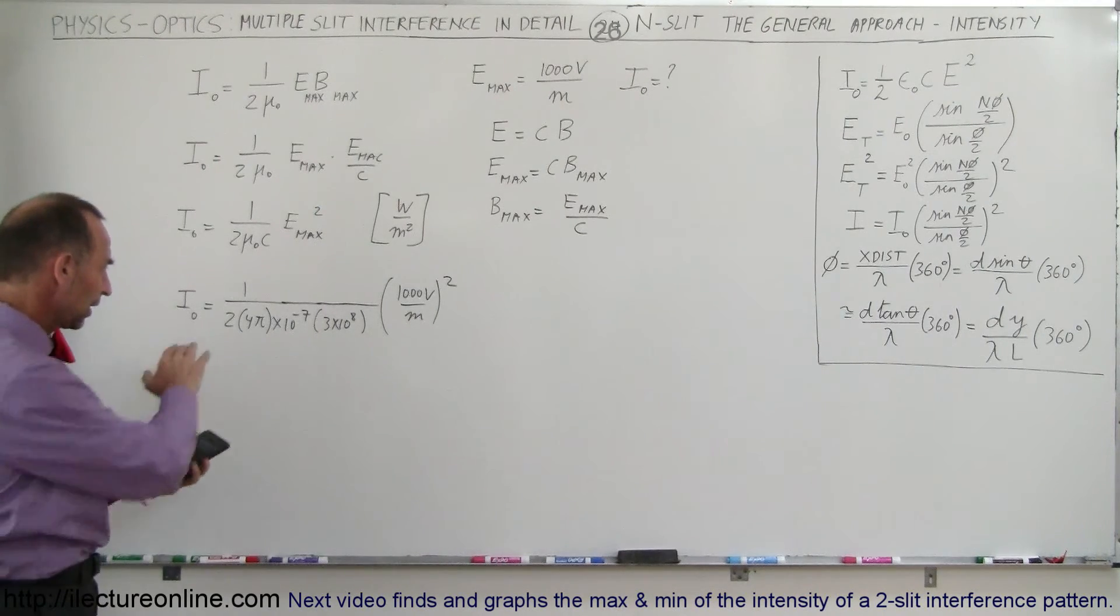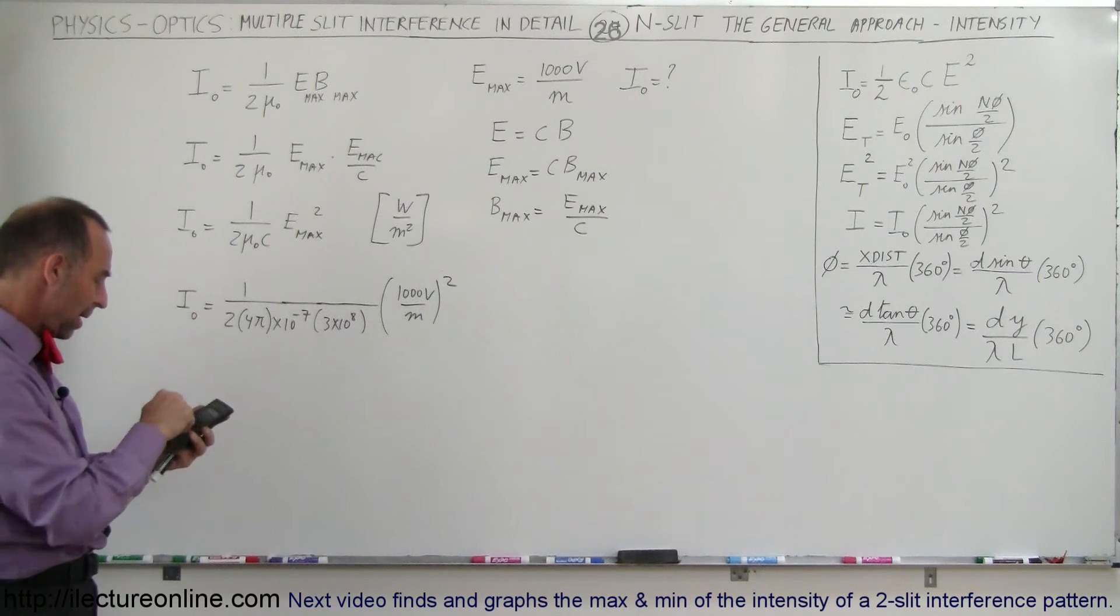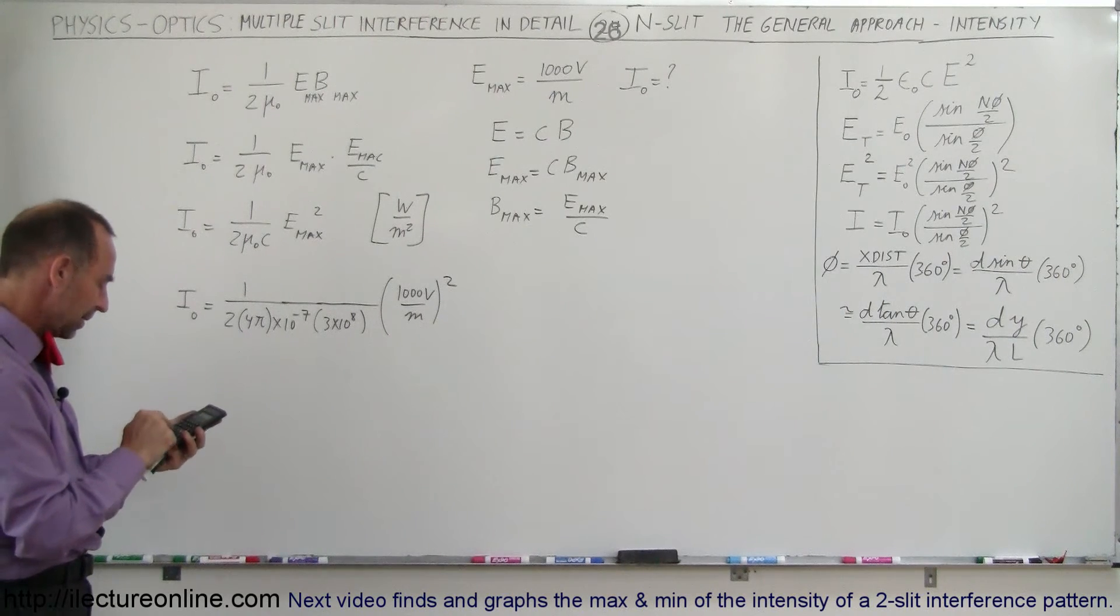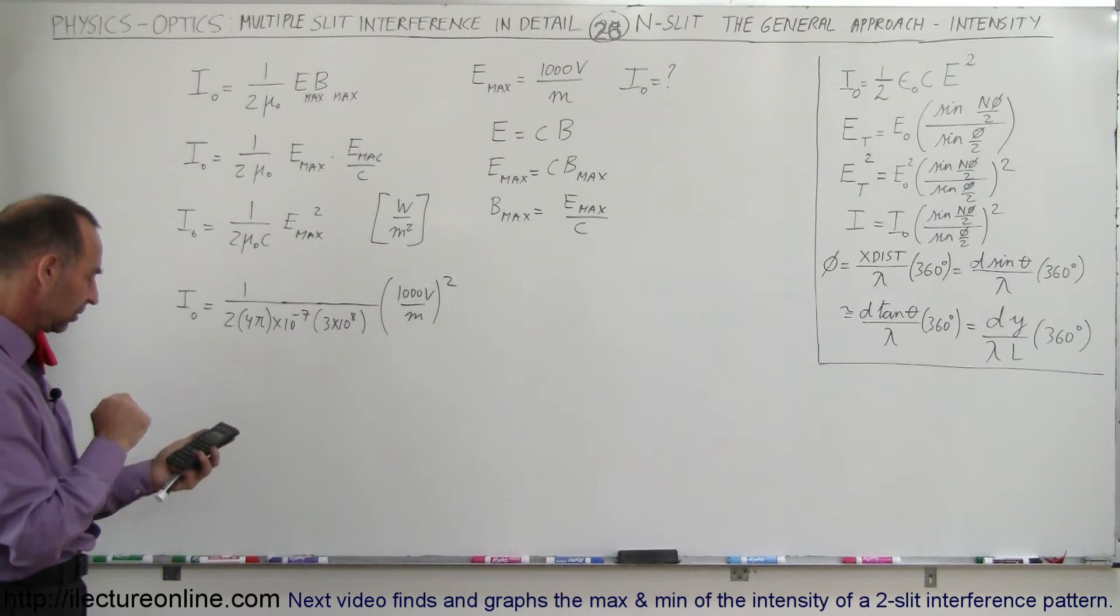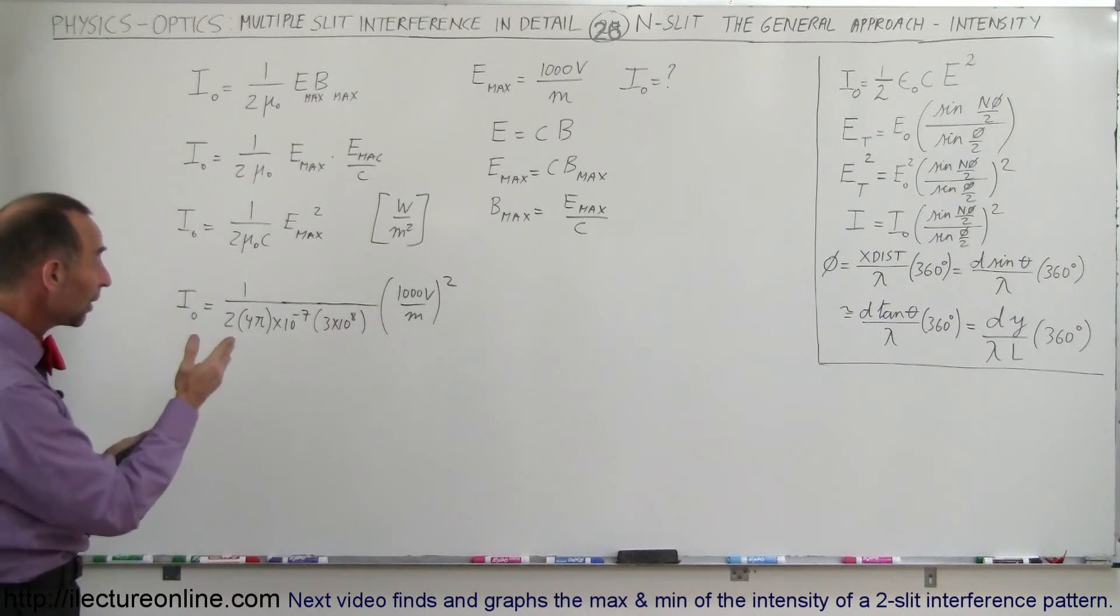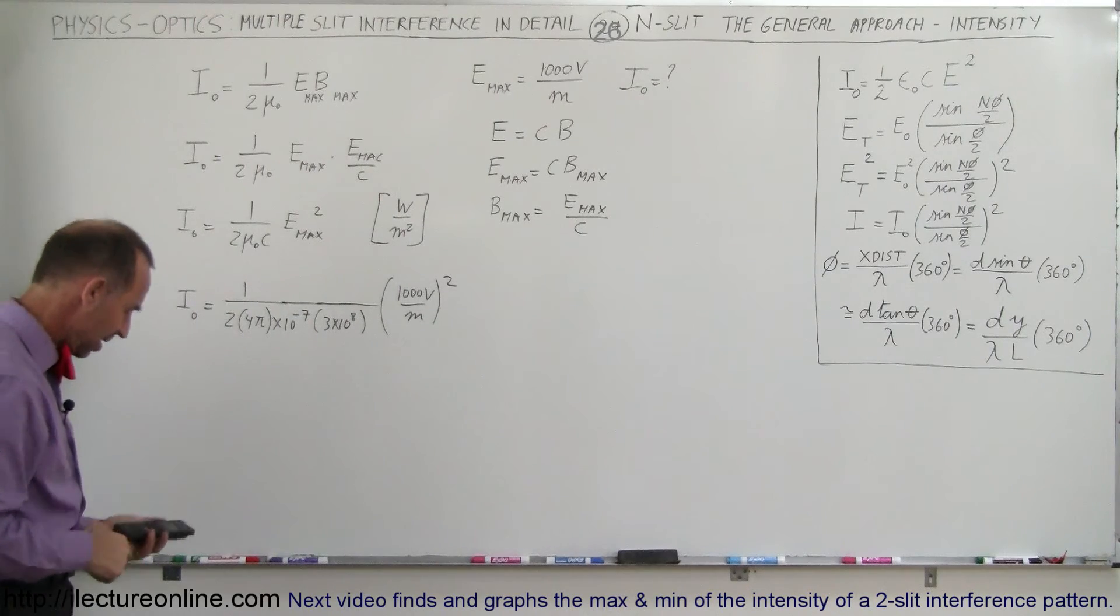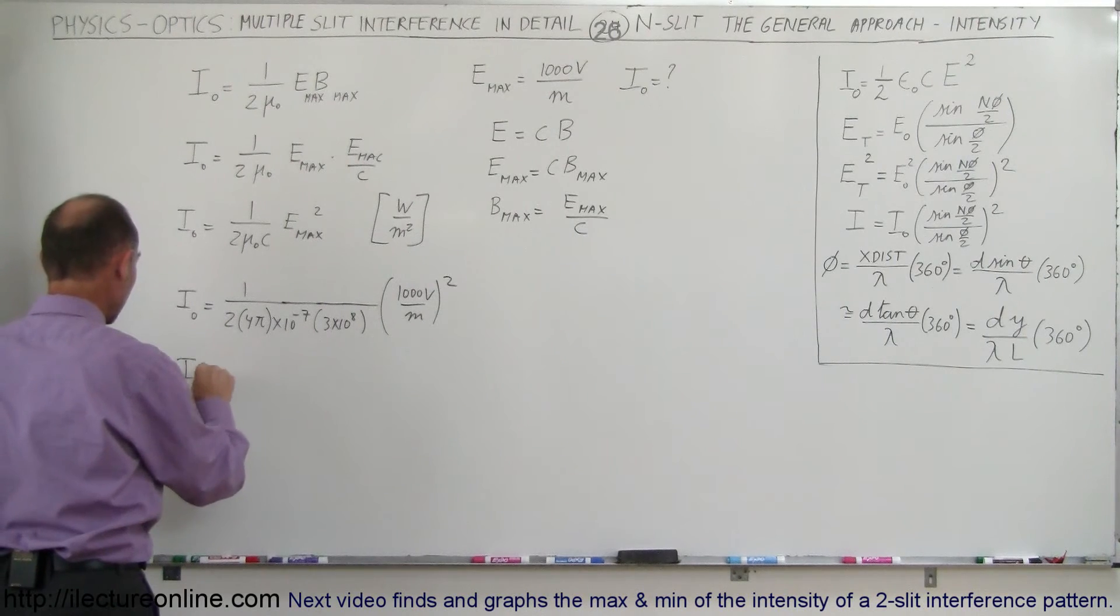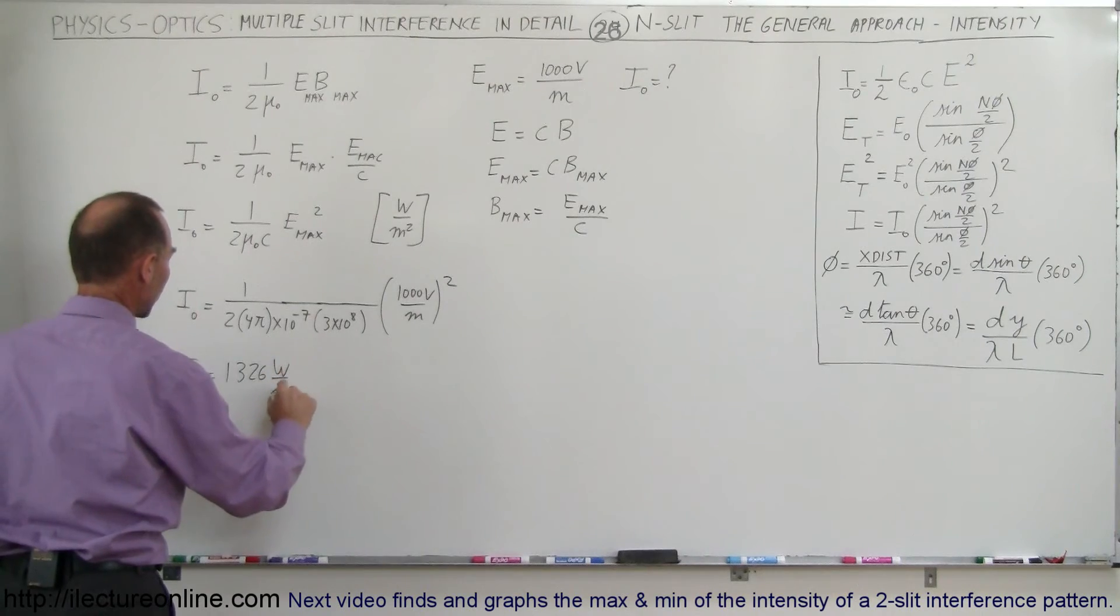So we have, let's do the denominator first. So we have 2 times pi times 4E to the 7 minus times 3E to the 8 equals, take the inverse of that, and then multiply that times a thousand squared, which is a million times 1E to the 6 equals, and we have I sub nought equal to 1,326 watts per square meter.